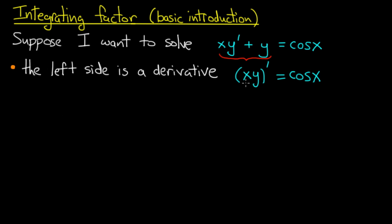Applying the product rule to the product of x and y gives us xy' plus the derivative of x, which is 1, times y. So the left hand side of this equation is a derivative.